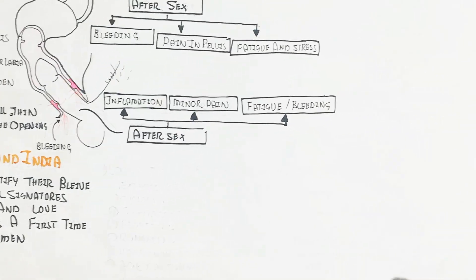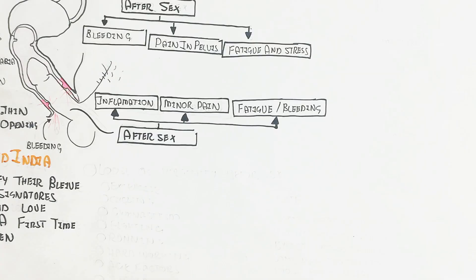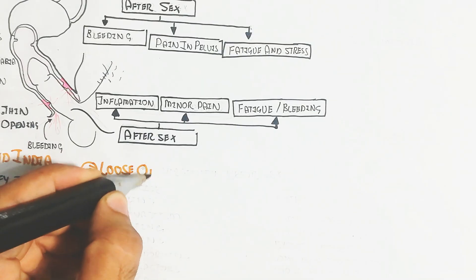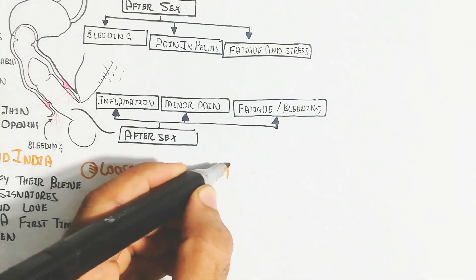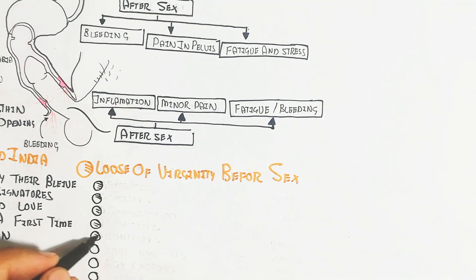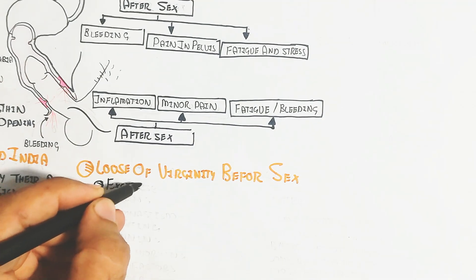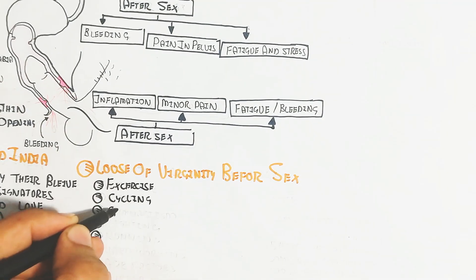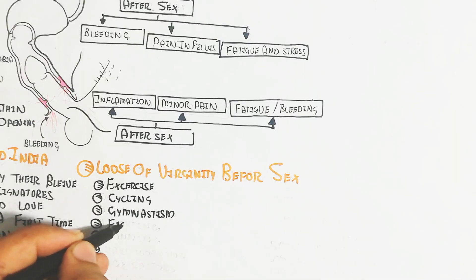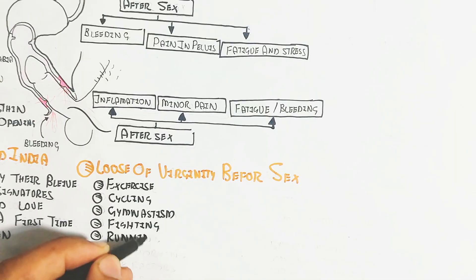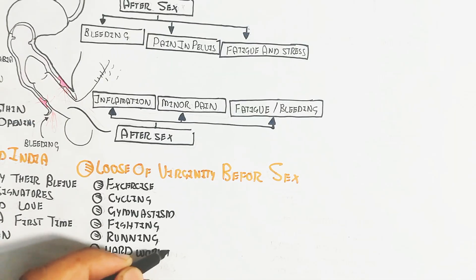We can identify, but it's not clear because some females have no virginity. How is this possible? Let's understand the loss of virginity before sex. Exercise, cycling, gymnastics, fighting, running, hard working, age factor, and surgery or punishment by tools.